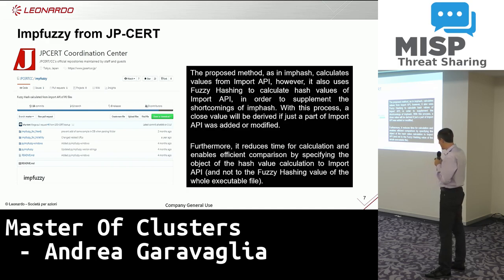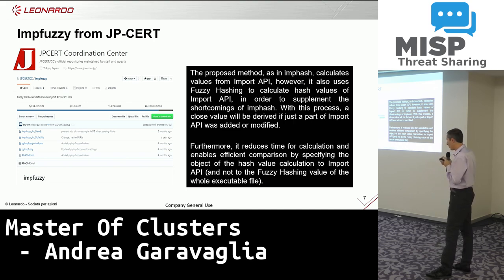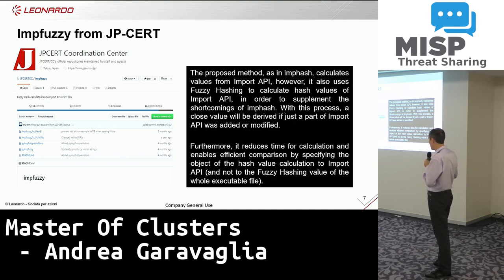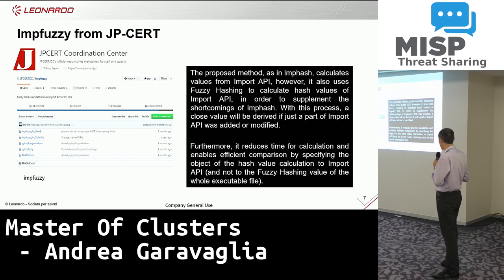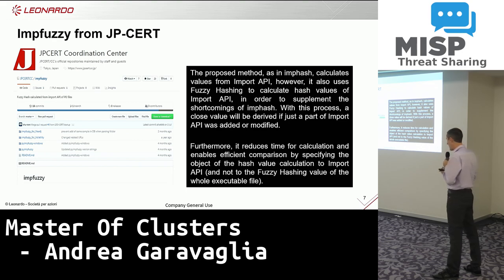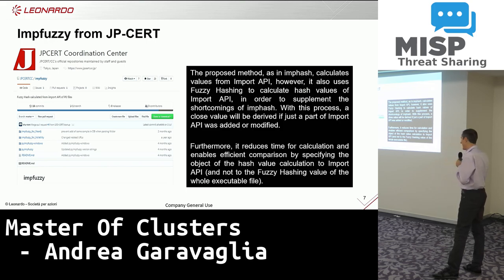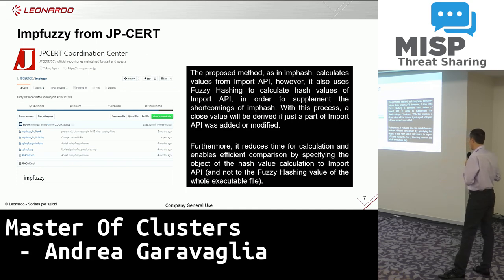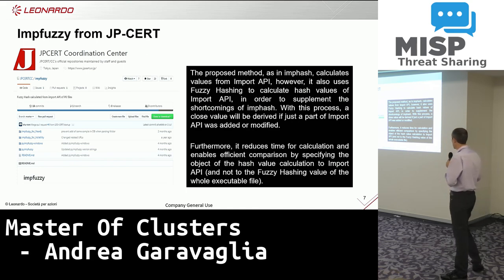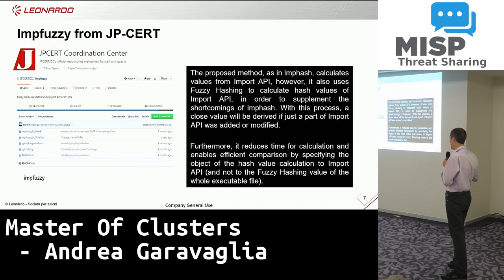So I discovered ImpFuzzy from JPCERT — the Church of Japan. They published the code on GitHub. I took this and started the analysis. This is a calculation of the fuzzy value against the import address table. It's faster, and with this technology it's possible to correlate samples that are different inside.